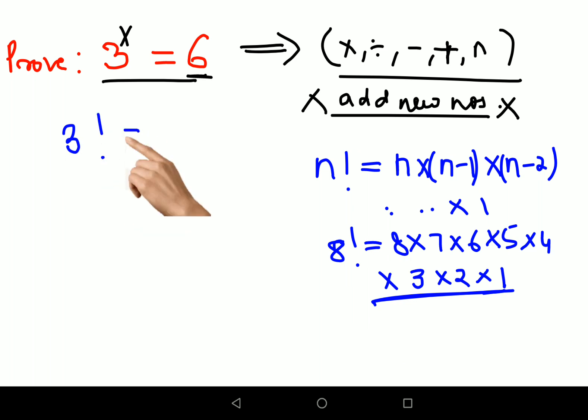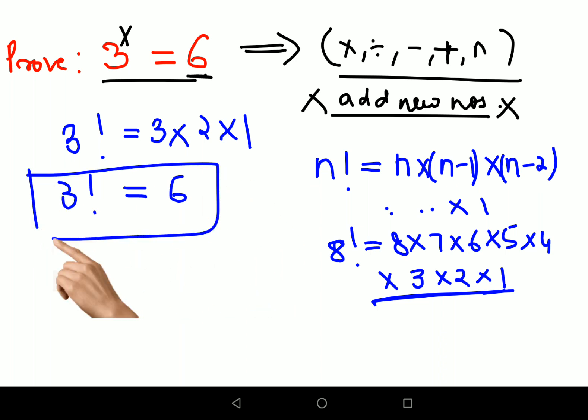So here if I put 3 factorial, now 3 factorial is nothing but you start from 3, go to 2, then 1. Here your answer then comes out to be 6. So therefore I can say 3 factorial is now equal to 6. So this is how you can prove that.